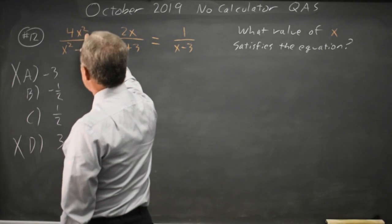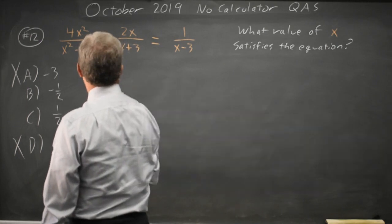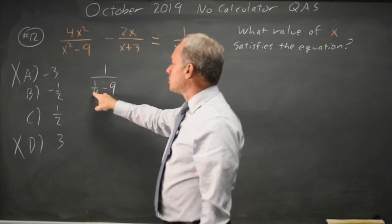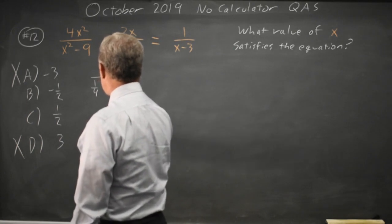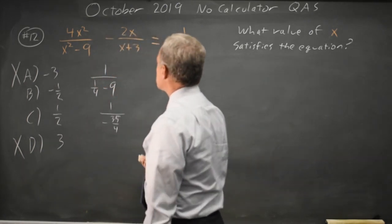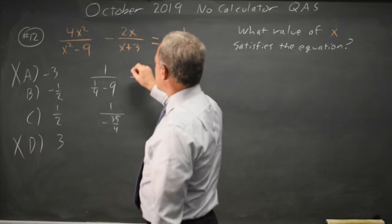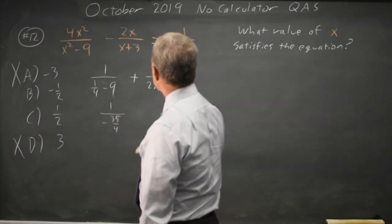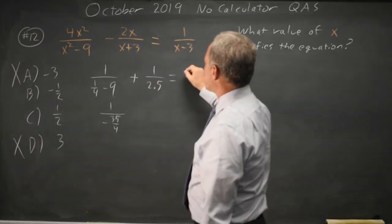So negative 1 half squared is positive 1 fourth times 4 is 1 over 1 fourth minus 9. 9 is 36 over 4, so 1 over 4 minus 36 over 4 is negative 35 over 4. 1 over negative 35 over 4. Negative 1 half times negative 2 is plus 1 over 2.5. Equals negative 1 half minus 3 is negative 3.5.